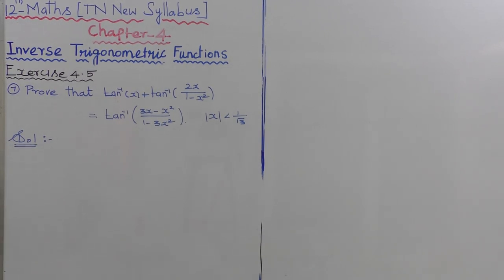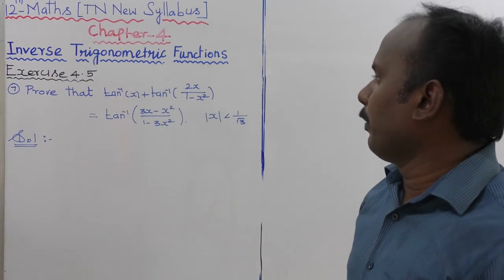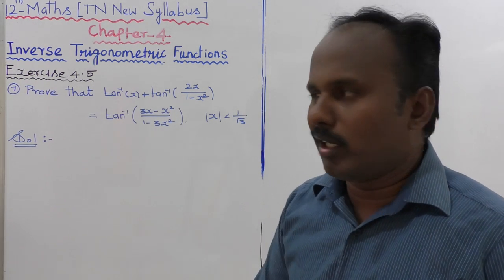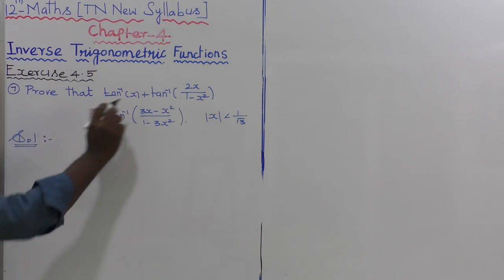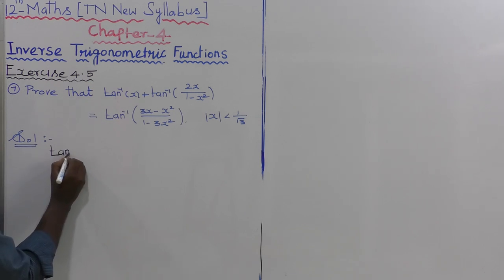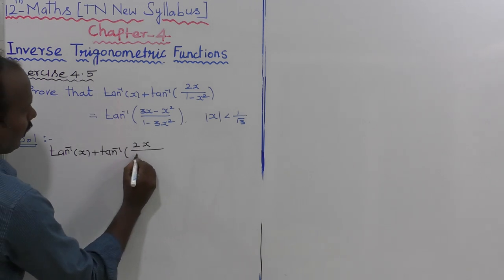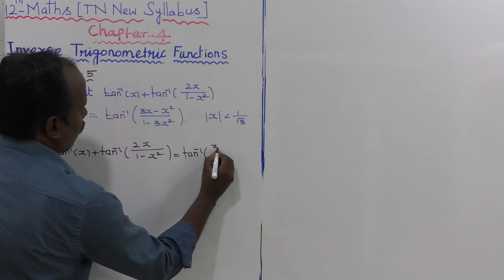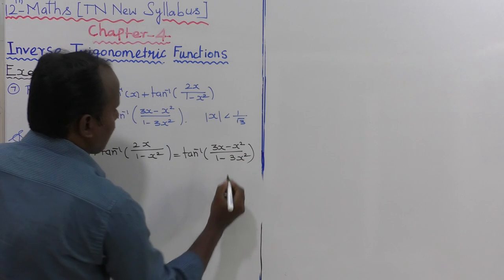Prove that tan inverse of x plus tan inverse of 2x divided by 1 minus x squared is equal to tan inverse of 3x minus x cubed divided by 1 minus 3x squared, given that the modulus of x is less than 1 by root 3. Let us take the given expression: tan inverse of x plus tan inverse of 2x over 1 minus x squared equals tan inverse of 3x minus x squared over 1 minus 3x squared.